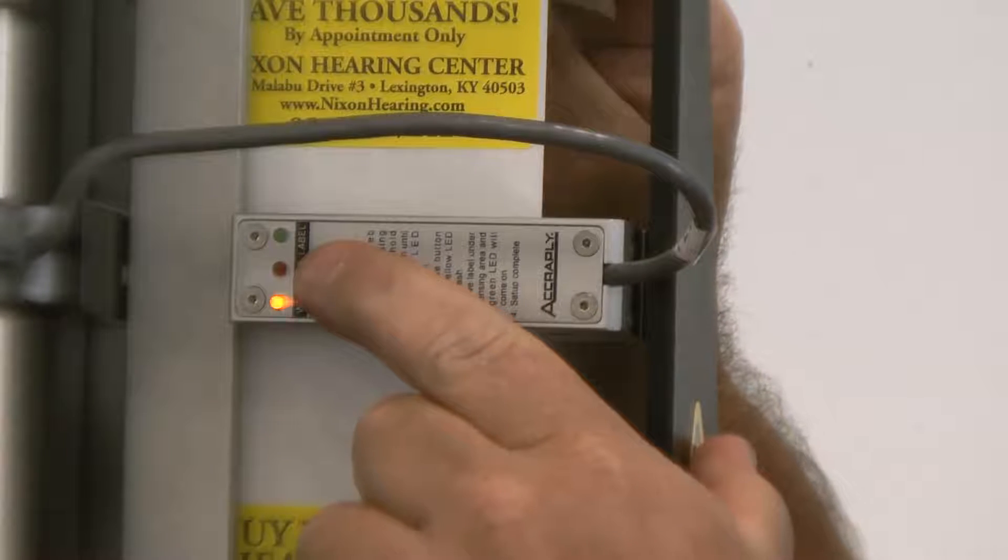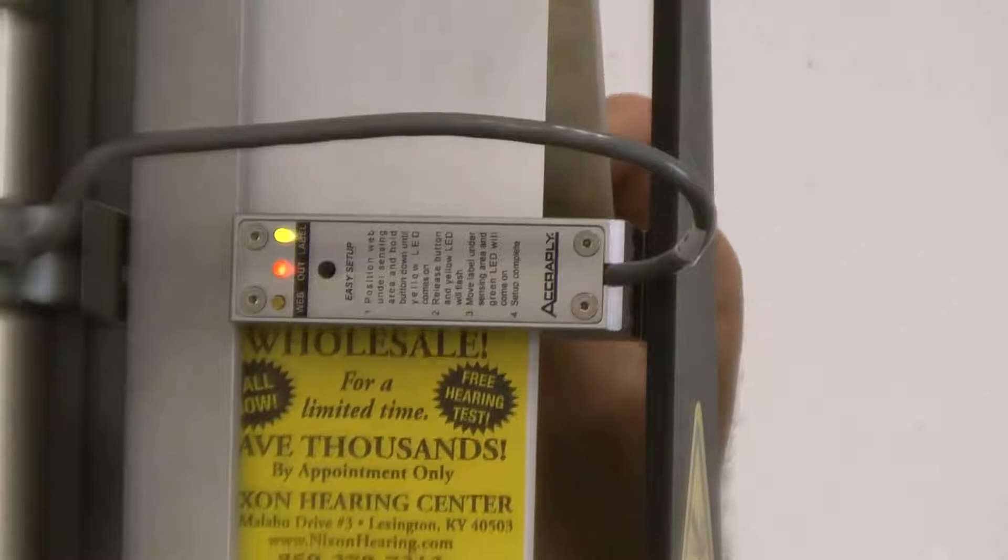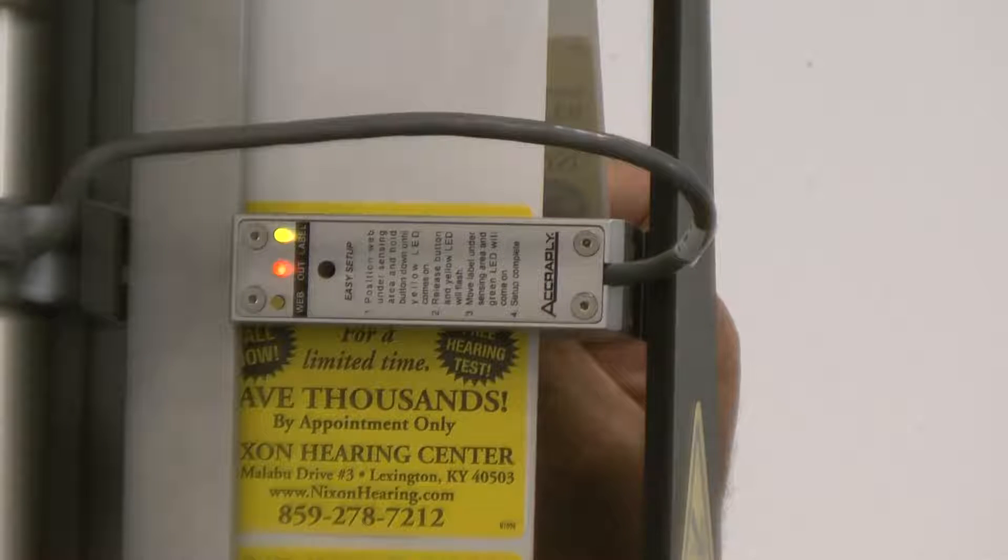Press and hold the button for at least one second. Let it go and the yellow light will begin to blink. At this point, pull the material until the label passes under the sensor. The sensor is now trained.